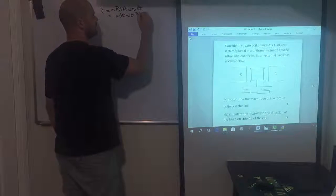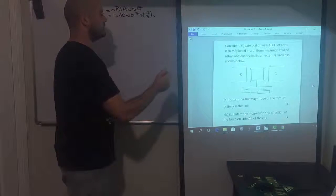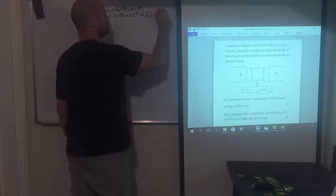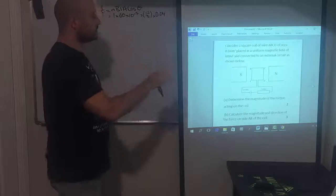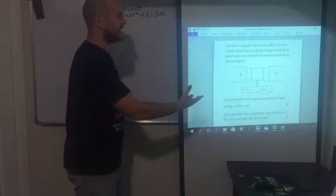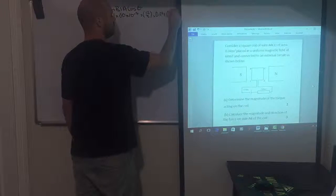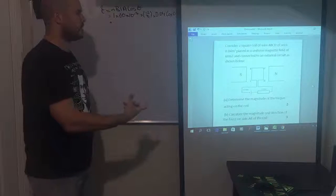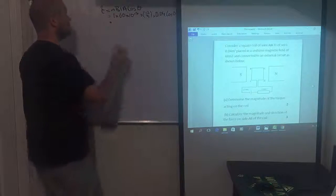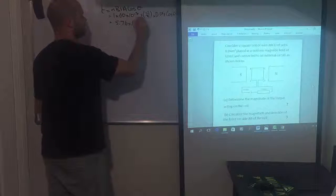So that times 12 on 5 times our cross-sectional area of 0.04. And the angle is the angle between the plane of the coil and the magnetic field. In this case here it's 0. It's going to be times cos 0. If you evaluate that you should get about 5.76 times 10 to the minus 3 newton metres.